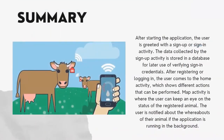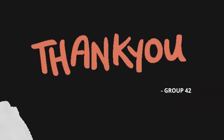To summarize the entire working of the application: after starting the application, the user is greeted with the sign-up or sign-in activity. Data collected during sign-up is stored in the database for verifying sign-in credentials. After registering or logging in, the user arrives at the home activity which shows different actions, including a map activity where the user can monitor the status of the registered animal. The user is notified about the whereabouts of their animal if the application is running in the background. With that said, I would like to thank you all for going through this video and understanding the working of our project made as part of our capstone.